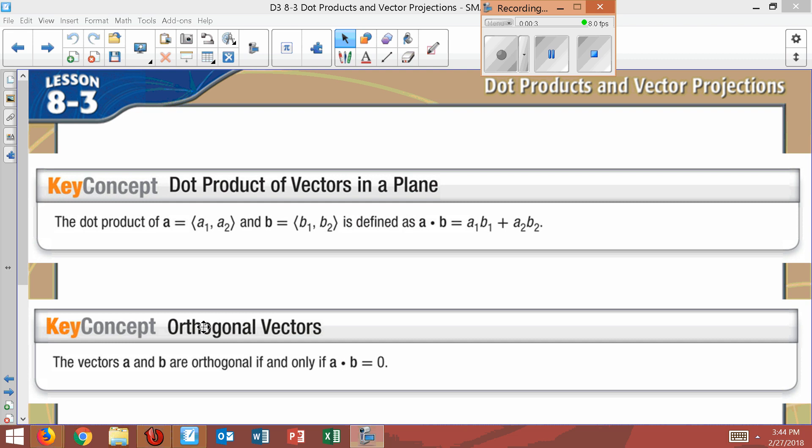There's a term here, orthogonal, which means basically that they are right angles. They would form a right angle. It's only true if A times B adds up to zero. That would mean orthogonal.